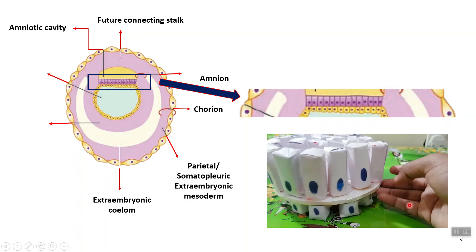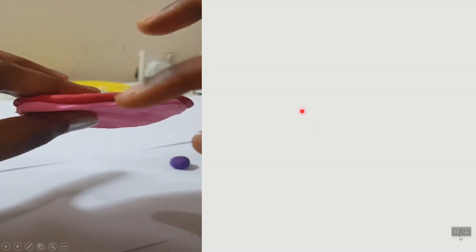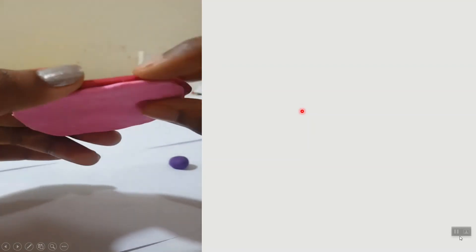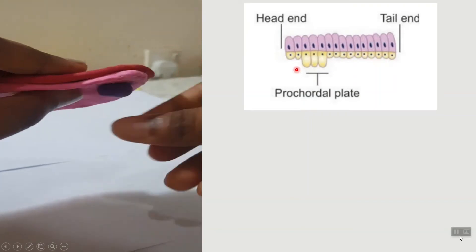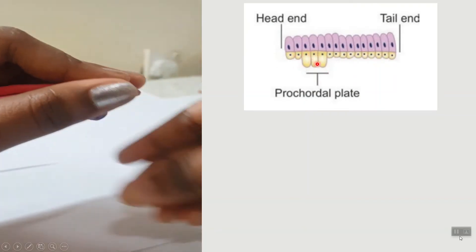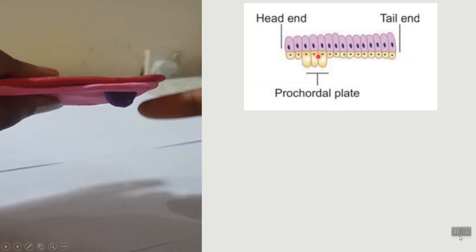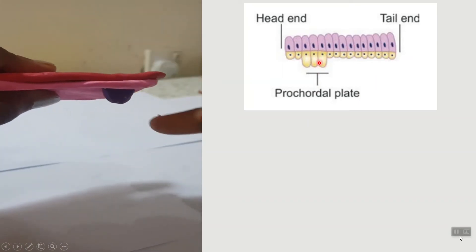Now let's see how the notochord is formed from this bilaminar embryonic disc. You can see the red ectoderm and the pink endoderm. This is a bilaminar disc consisting of only two cell layers. The ectodermal cells are columnar and the endodermal cells are cuboidal. Now, some cells of the endoderm will change from cuboidal to columnar in shape — and that forms the prochordal plate.